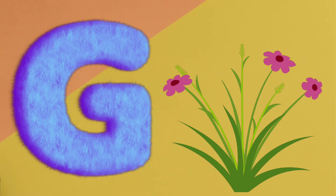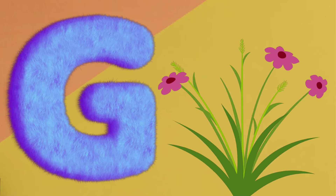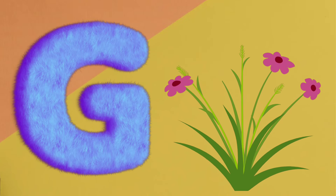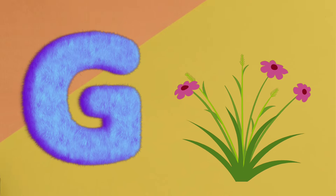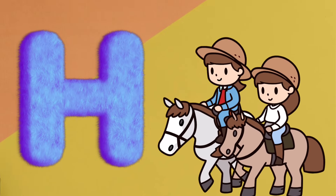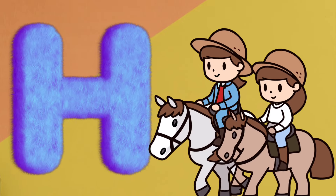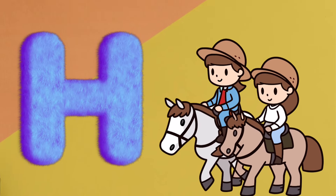G is for grass. Ga, ga, grass. H is for horse. Ha, ha, horse.